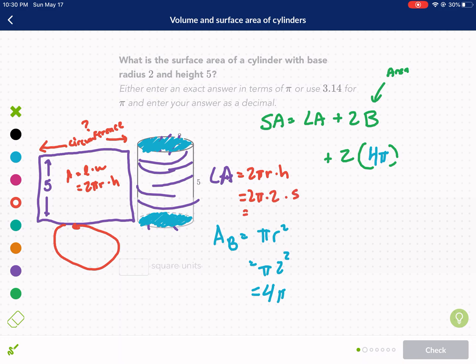So we get 4 times 5 is 20, 20π. So now we know our lateral area is 20π, and we can calculate the surface area by adding these two together. So surface area equals 20π plus 2 times 4π because there's two bases, 8π.